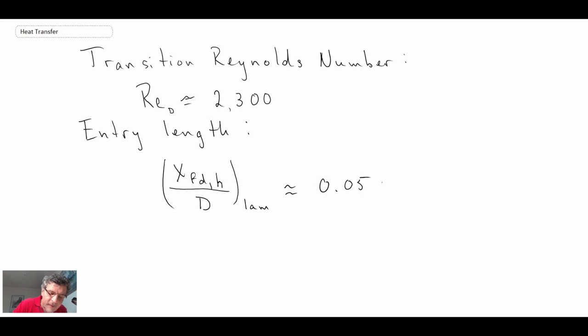It is approximately 0.05 times the Reynolds number based on diameter. And if we have a turbulent flow...